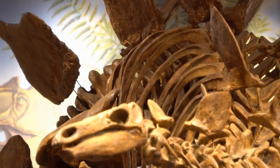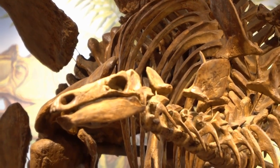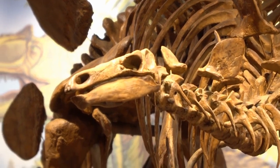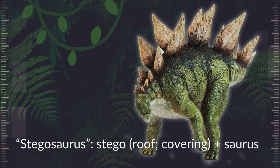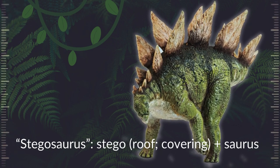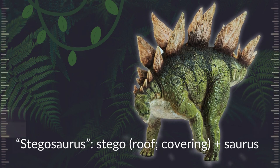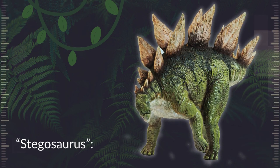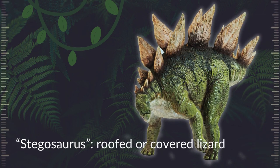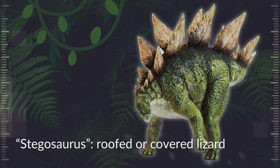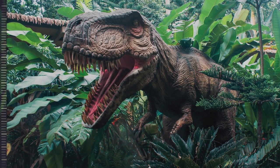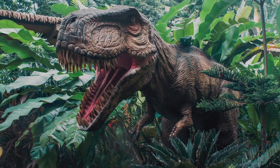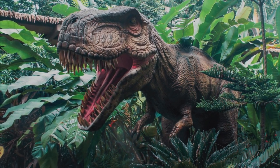The name stegosaurus was used to describe a creature with distinctive plates extending along its spine. The name was also coined by Othniel Charles Marsh using the Greek words stego, meaning roof or covering, and saurus. Quite literally, the name stegosaurus can be translated to mean roofed lizard or covered lizard. Similar etymological patterns exist across most dinosaur names as suffixes were adopted from the Greek language to describe distinguishing features and characteristics.